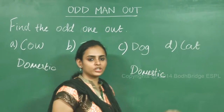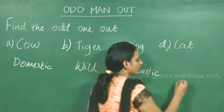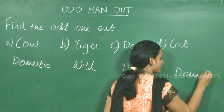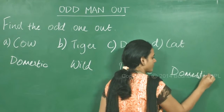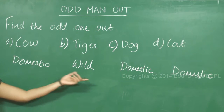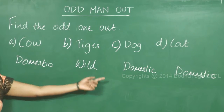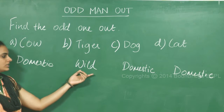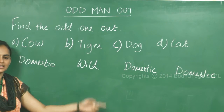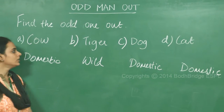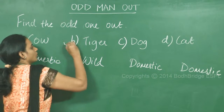And Option D, Cat, is again a domestic animal. So we can see that Option A, Option C, and Option D are all domestic animals. However, Option B, Tiger, is a wild animal. Hence, the answer is Option B, Tiger, which is the odd one out.